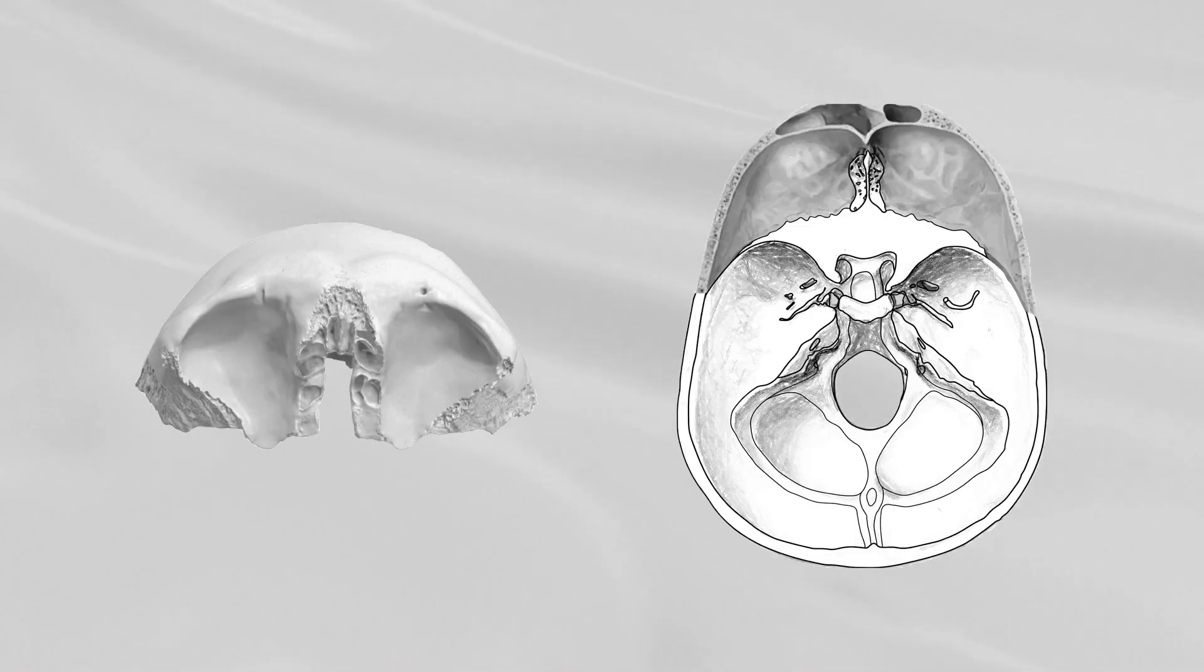This portion consists of two thin triangular plates, the orbital plates, which form the roof of the orbits. Laterally, each orbital plate presents, under cover of the zygomatic process, a shallow depression, the lacrimal fossa for the lacrimal gland.